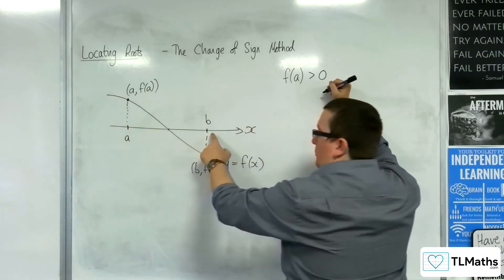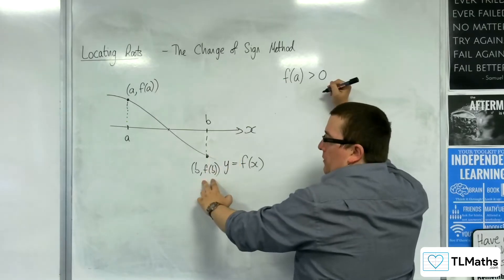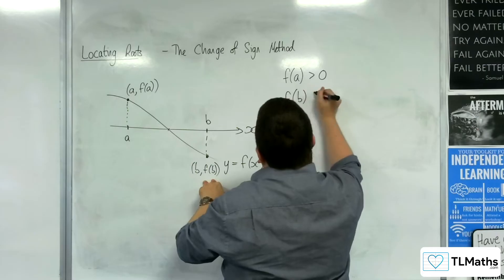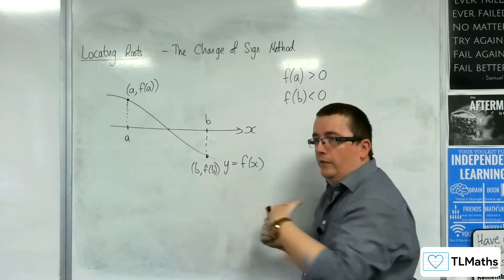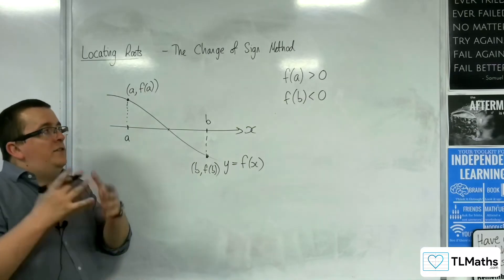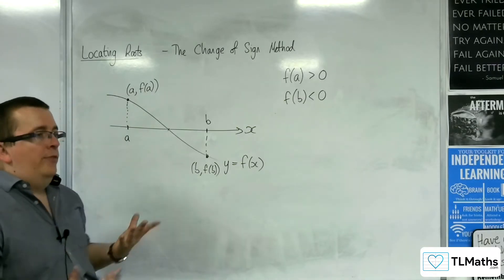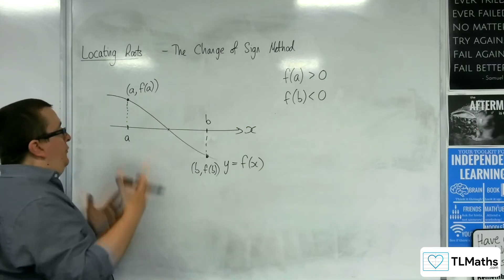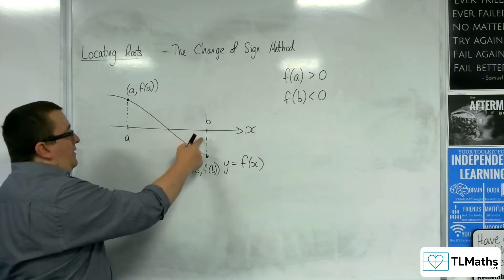And if I substituted b into my function and I got a value that was negative, that would mean that the curve has gone below the x-axis. So I could infer from that that the curve must cross the x-axis somewhere between a and b.